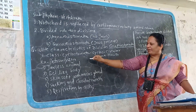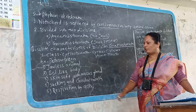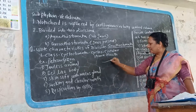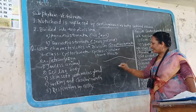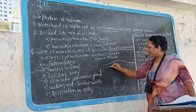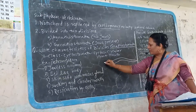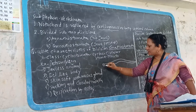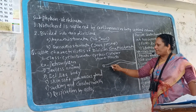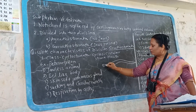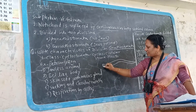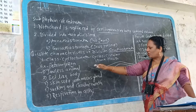An example of Cyclostomata is Petromyzon. Petromyzon is an elongated fish-like structure with a circular mouth surrounded by lips, but the mouth does not have jaws.